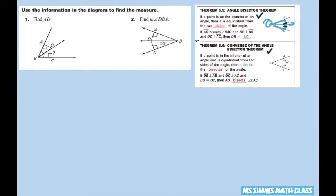The converse just says if the point is on the interior of an angle and is equal distance, so this point here is equal distance from A and C, or in this case from DB to DC.